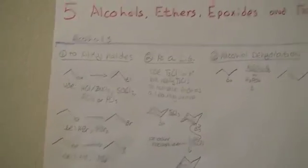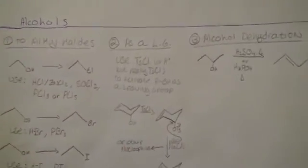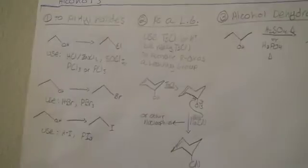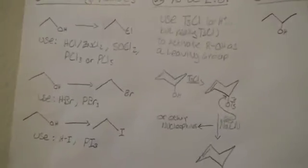For alcohols, you need to know lots of ways to turn them into an alkyl halide. Particularly an alkyl chloride, alkyl bromide, or alkyl iodide.